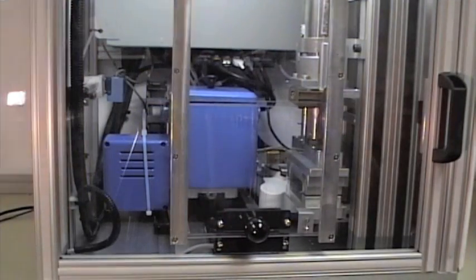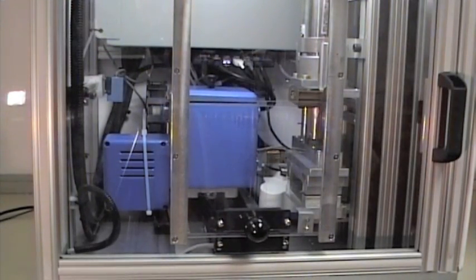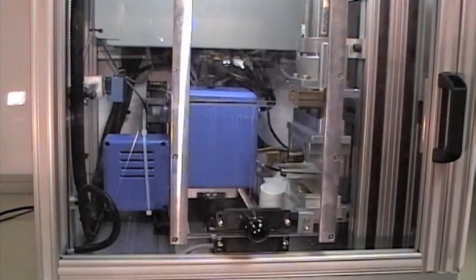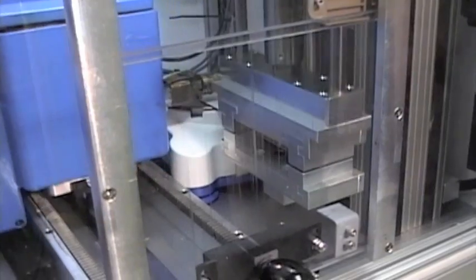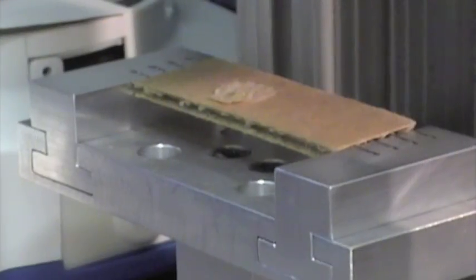Before the test takes place, an actuator sets the pressure over the sample. Once the glue is dispensed and pressure is applied to the cardboard samples, the actuator rises and a load cell registers the maximum amount of force needed to separate the test pieces.